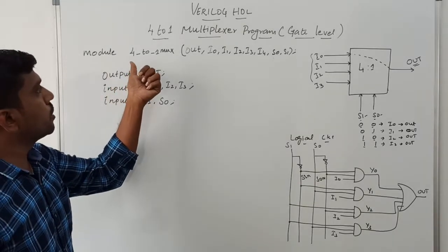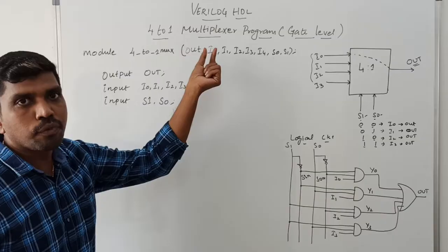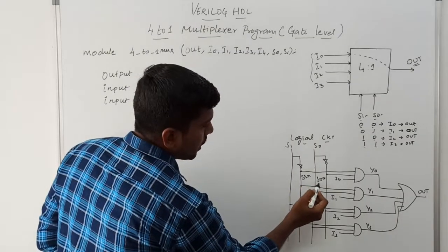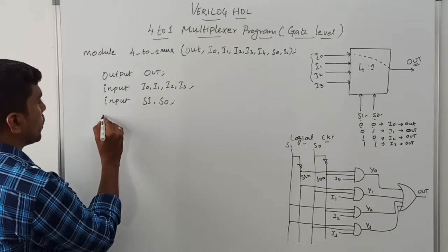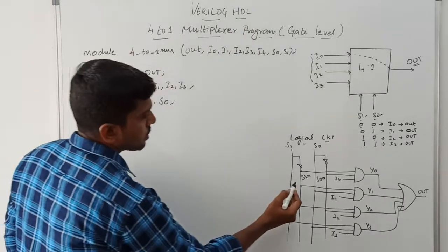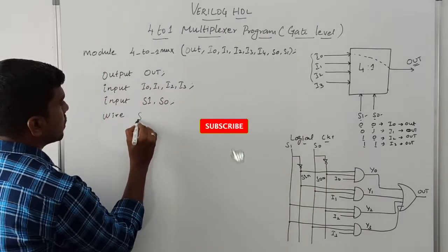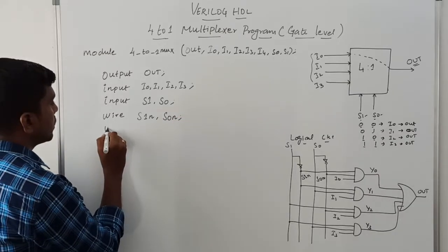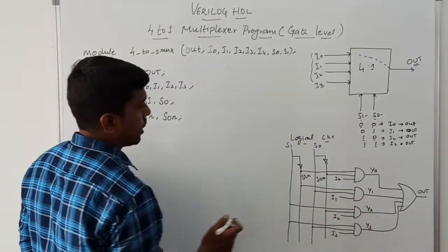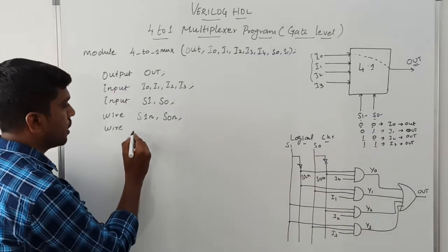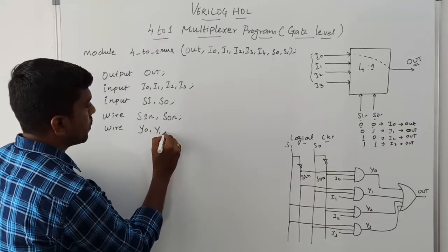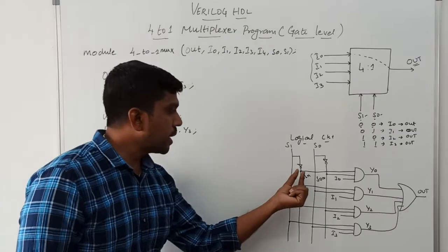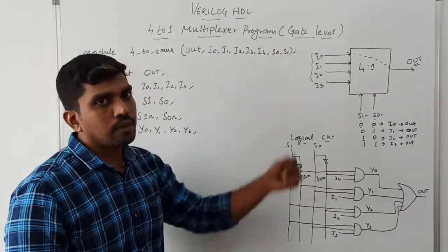So far you have declared the module name, output port list, and input signals. Then you declare the intermediate NET and internal NET signals — these are declared using 'wire'. First I declare the intermediate signals S1_N and S0_N, then I declare the internal NET signals Y0, Y1, Y2, Y3 — also declared as wire. After declaring the wire signals, we take each gate one by one, because this is gate level programming.